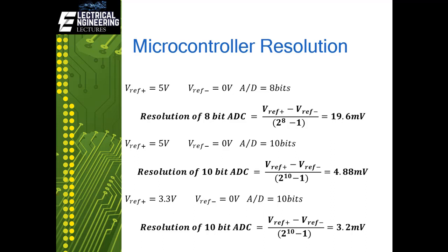For an 8-bit ADC with V-reference of 5 volts and 0 volts for V-reference-minus, the resolution is 19.6 millivolts — meaning it cannot read less than 19.6 mV. For a 10-bit ADC with the same input signal the resolution improves to 4.88 millivolts. If you keep the ADC bits the same but reduce V-reference to 3.3 volts using an external reference, the resolution becomes 3.2 millivolts.